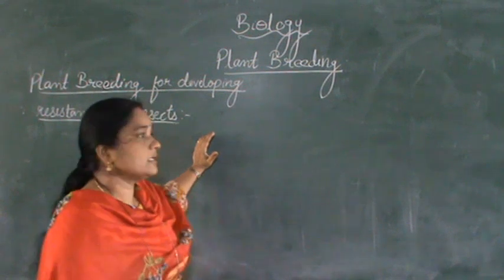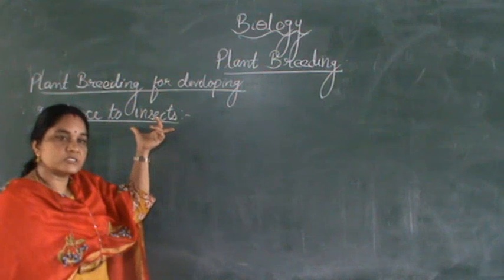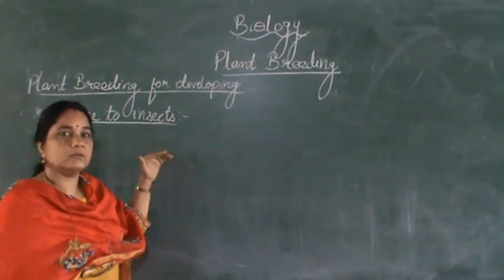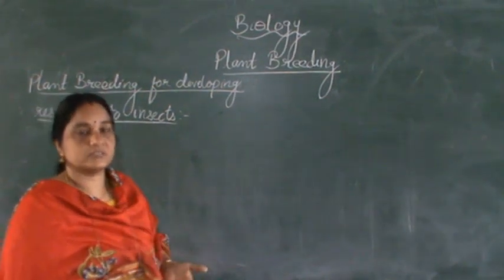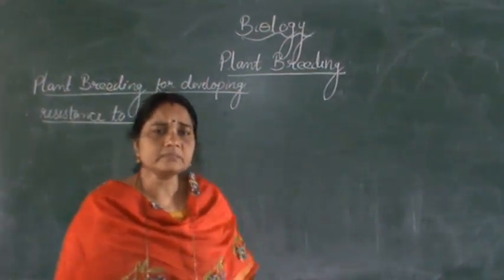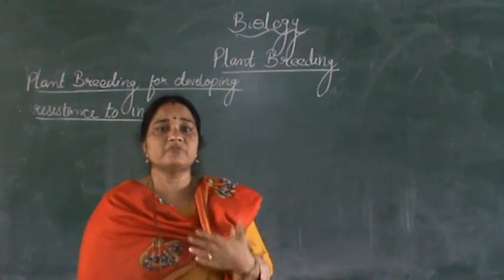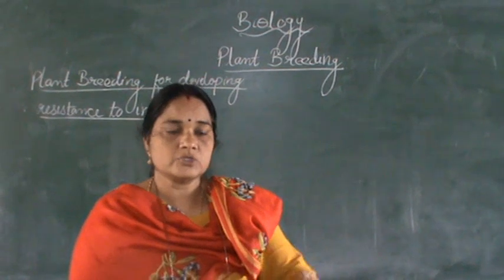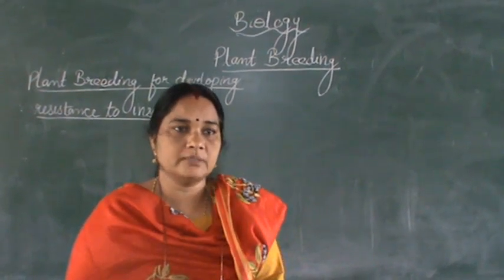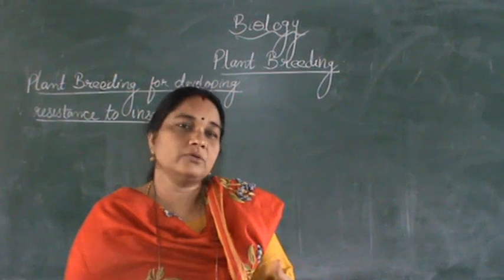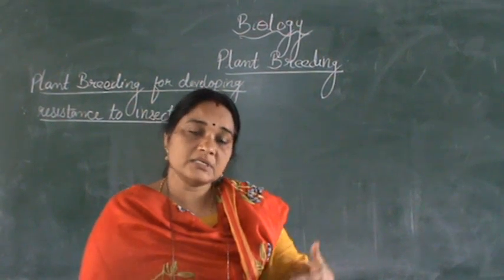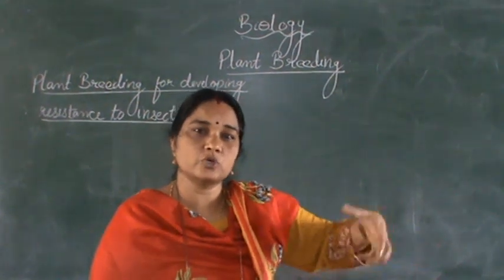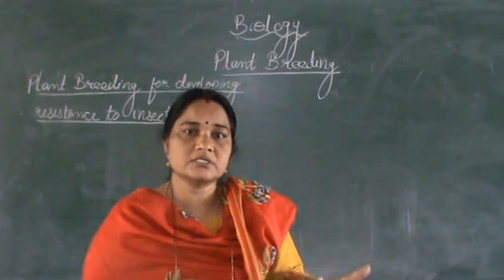So for that case, we are going to study how to develop resistance towards insects. There are certain plants around us which have developed resistance towards insects. You can see this in the garden itself — the plants we want to grow take a lot of care but sometimes get infected by insects. At the same time, wild varieties like grass or other weeds grow very well. So what is the reason for that?